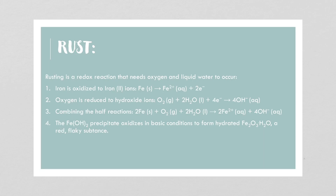One redox reaction we're all familiar with is rust. Rusting is a redox reaction that requires oxygen and liquid water. First, iron is oxidized: Fe → Fe²⁺(aq) + 2e⁻. Then oxygen is reduced: O₂ + H₂O + 4e⁻ → 4OH⁻. Combining the half reactions: 2Fe + O₂ + 2H₂O → 2Fe²⁺ + 4OH⁻. The iron(II) hydroxide precipitate then oxidizes in basic conditions to form hydrated iron(III) oxide — the red flaky substance we know as rust. When it flakes off, iron is lost and things rust out.